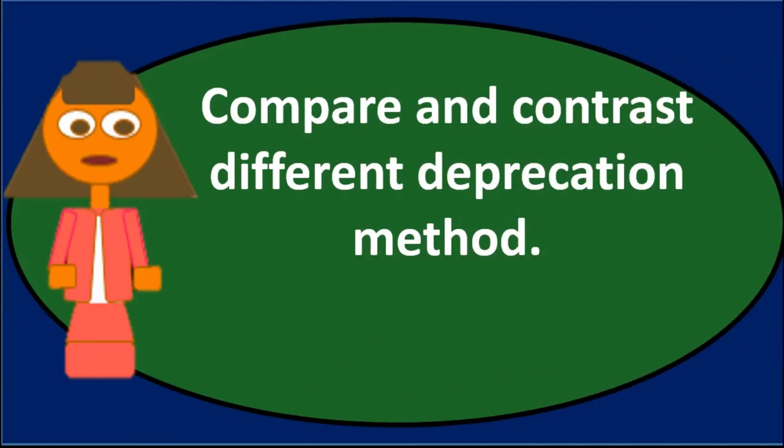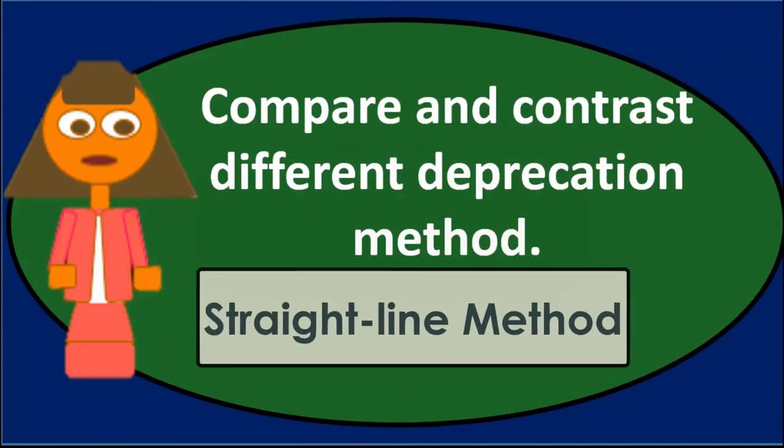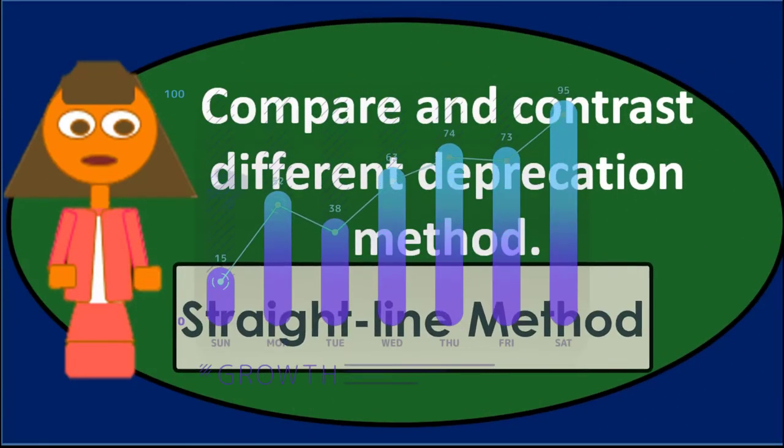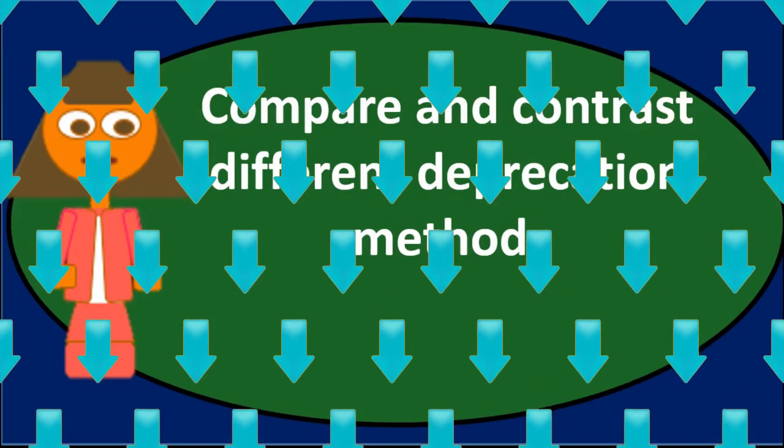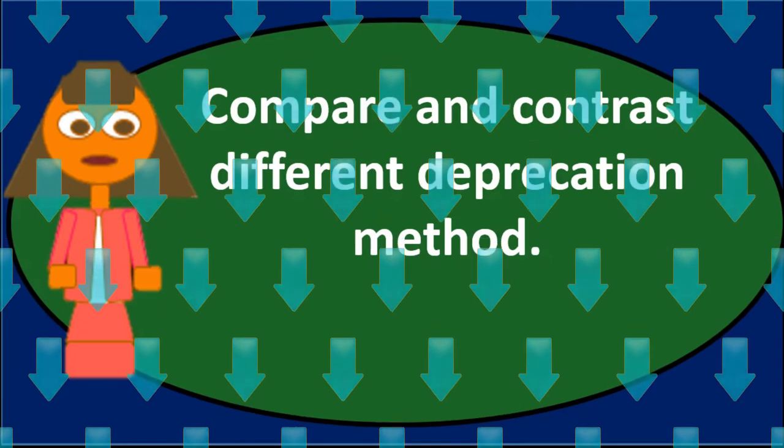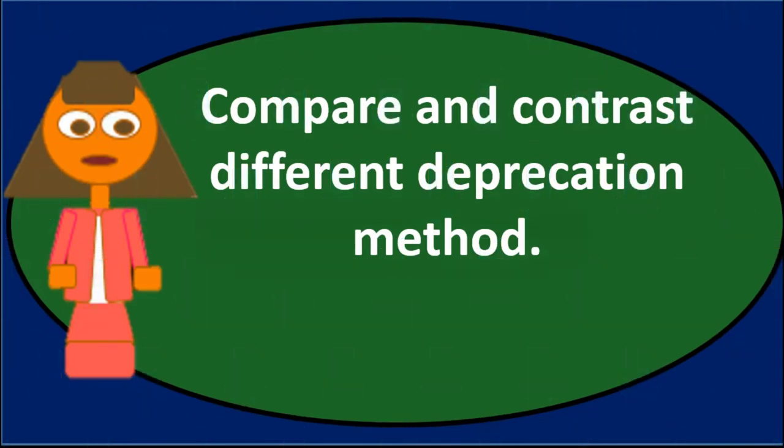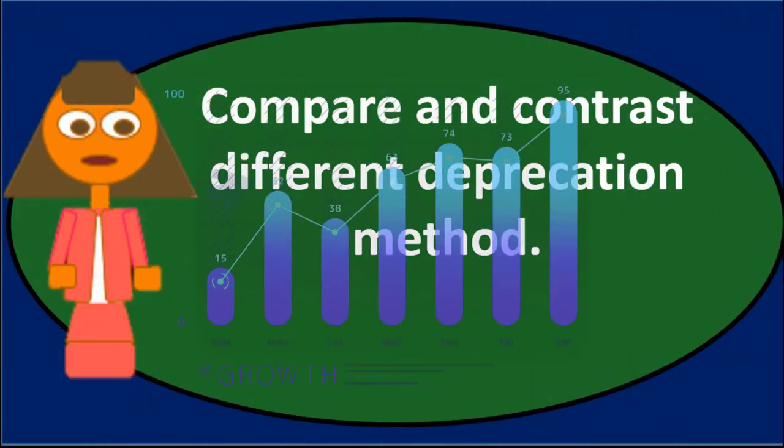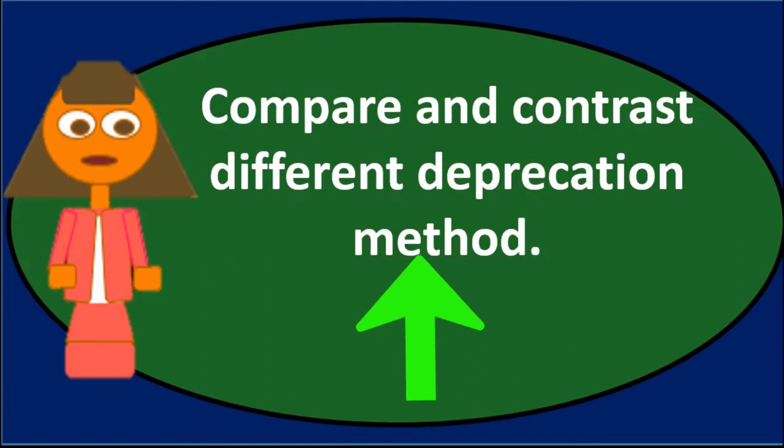It'll switch itself out, meaning the straight line method will have a higher depreciation in the later years and therefore a lower net income. And the double declining balance method will have a lower depreciation expense in the later years and a higher net income, therefore. So it works itself out in the end.